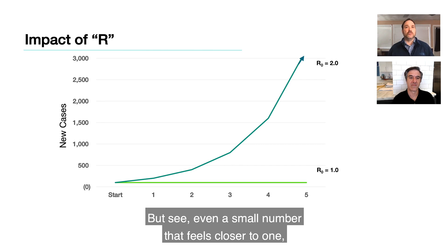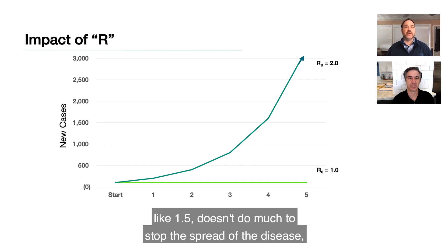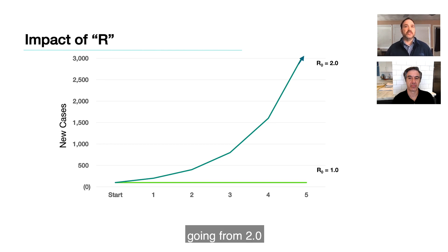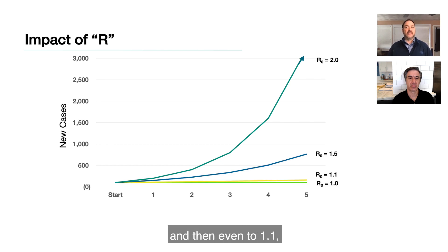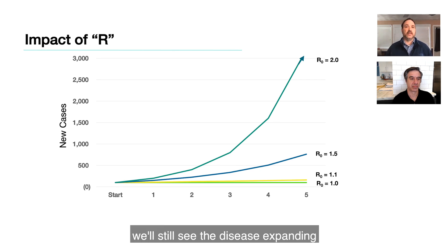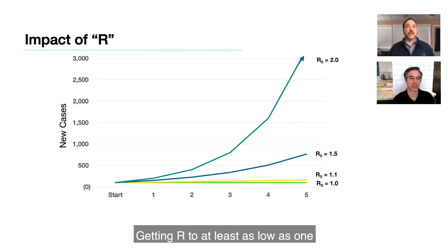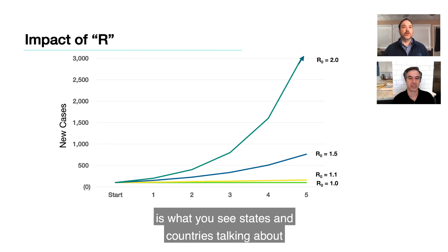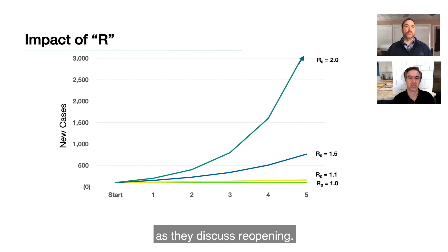Even a smaller number that feels closer to 1, like 1.5, doesn't do much to stop the spread. Going from 2.0 to 1.5, and then even to 1.1, will still see the disease expanding, and quickly, depending on the time period. Getting R to at least as low as 1, where the disease isn't growing, is what you see states and countries talking about as they discuss reopening.